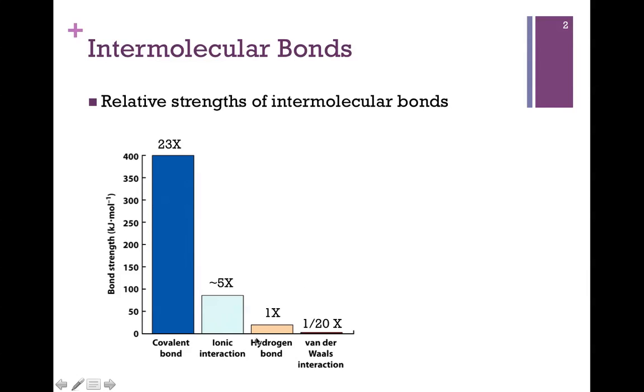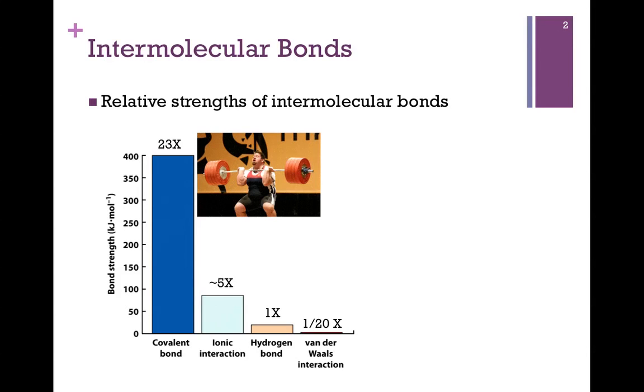We're going to take a hydrogen bond as our starting point. If you look to the left, you'll see an ionic bond is about five times as strong as that hydrogen bond, and a covalent bond is 23 times as strong. So comparing these three, the covalent bond is definitely our heavy lifter.